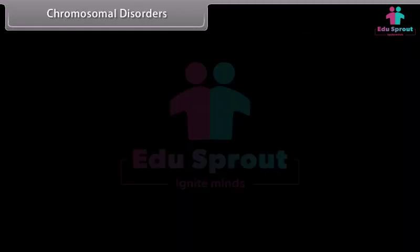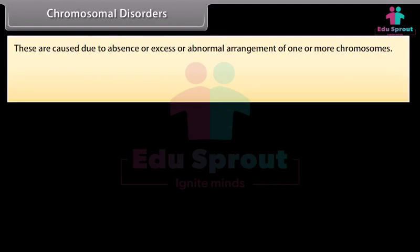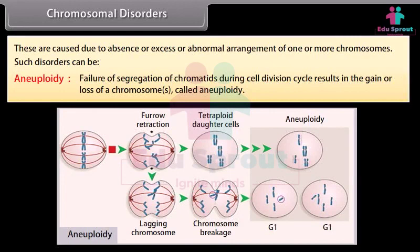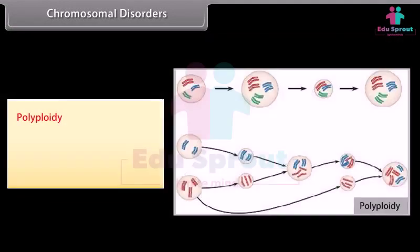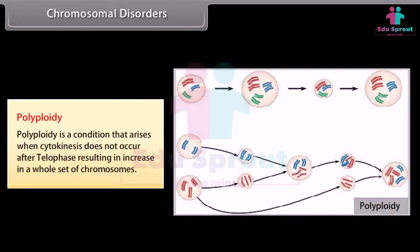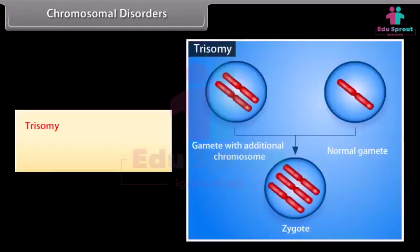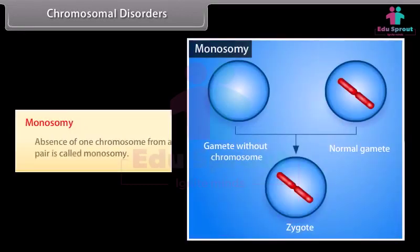Chromosomal disorders are caused due to absence, excess, or abnormal arrangement of one or more chromosomes. Aneuploidy: failure of segregation of chromatids during cell division results in the gain or loss of chromosomes. Polyploidy: arises when cytokinesis does not occur after telophase, resulting in an increase in a whole set of chromosomes. Trisomy: an extra copy of a chromosome. Monosomy: absence of one chromosome from a pair.